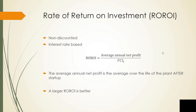The rate of return on investment is the interest rate-based metric for non-discounted techniques. It is calculated as the average annual net profit over the life of the plant after startup — you don't include the years of construction — divided by the fixed capital investment without the land, since you'll recover that. A larger rate of return is a better investment.